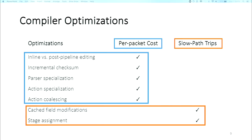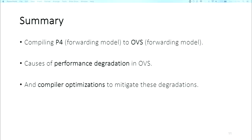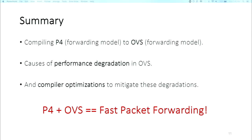Regarding causes of performance degradation in OVS: one is the per-packet cost — the end-to-end CPU cycles consumed by a switch for processing a single packet. Another is the number of times the packet has to be sent to the slow path to be processed by the match-action tables. To improve performance, we implemented five optimizations to reduce per-packet cost induced by compiling P4 to OpenVSwitch, and two optimizations to reduce the number of slow-path trips. After applying optimizations, performance was comparable to native OVS — less than 2% degradation.